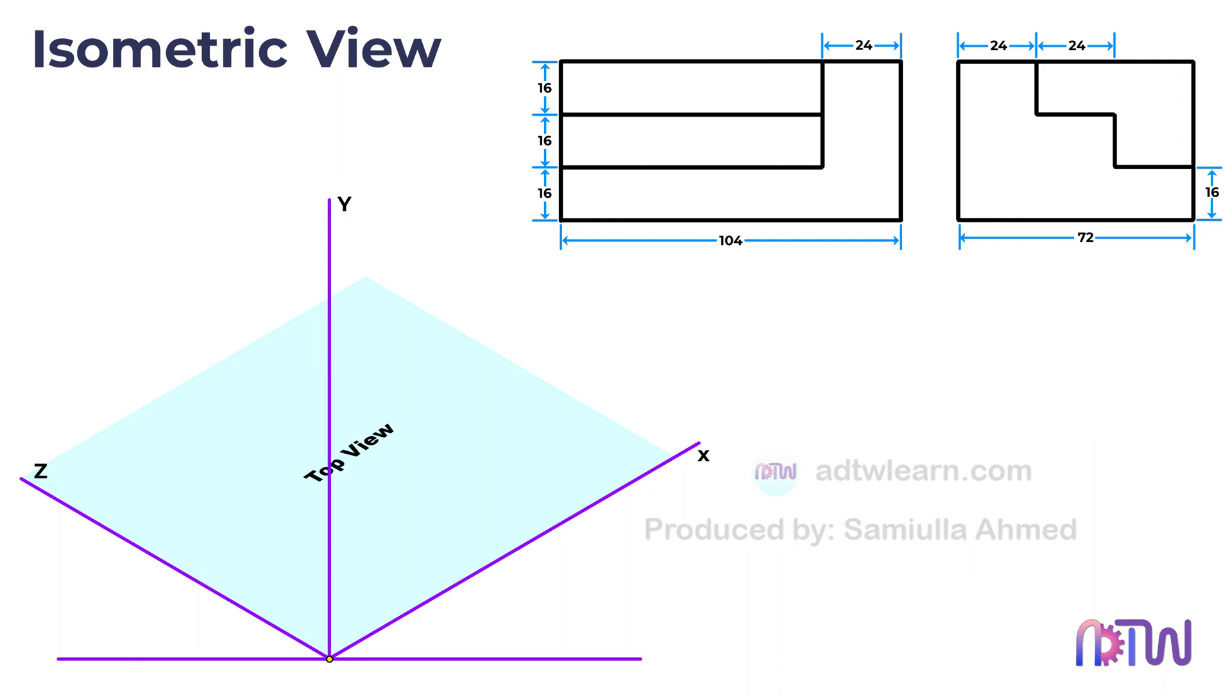The top view of the object is always drawn in the XZ plane, so that's another key point to keep in mind. On the left hand side, we see the front view of the object, while on the right hand side, we see the side view.